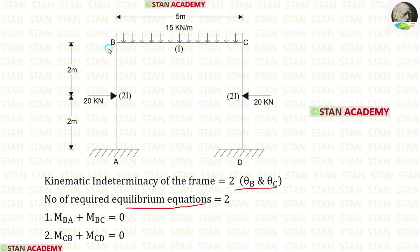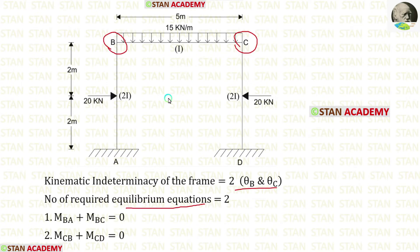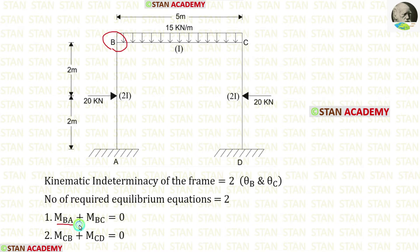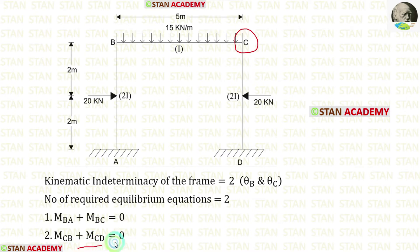There are two unknowns, so we need two equilibrium conditions. These can be made from joint B and joint C, where the summation of moments will be zero. At joint B: MBA plus MBC equals zero. At joint C: MCB plus MCD equals zero.